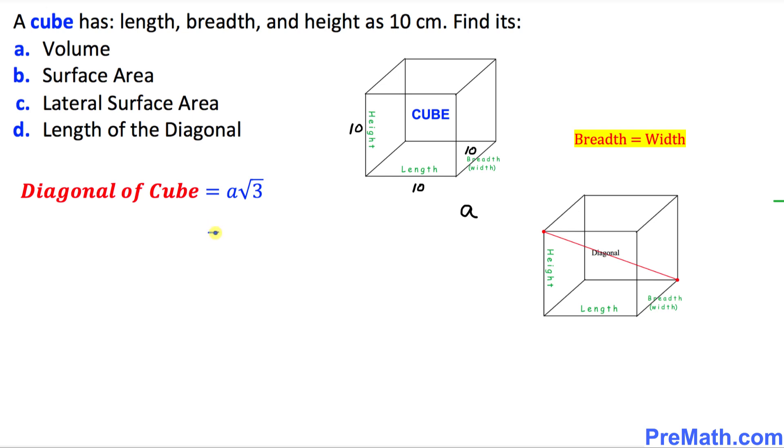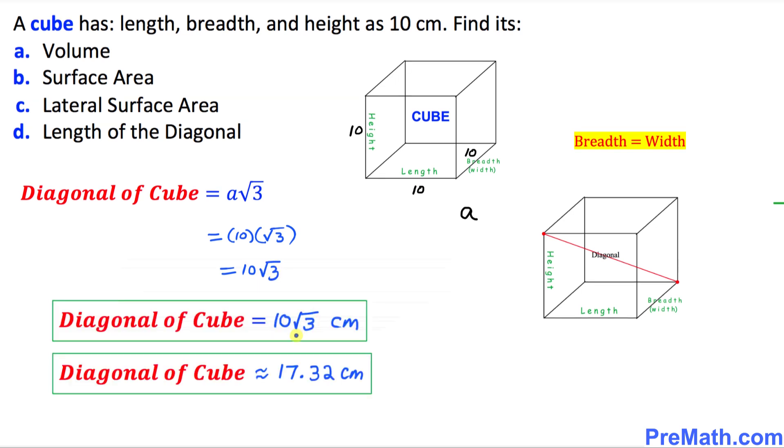The formula is a√3. In our case, that's 10 times the square root of 3, so the answer is 10√3. Here is our answer: the diagonal of the cube in radical notation and in decimal notation as well. In decimal notation, it is approximately equal to 17.32 centimeters.